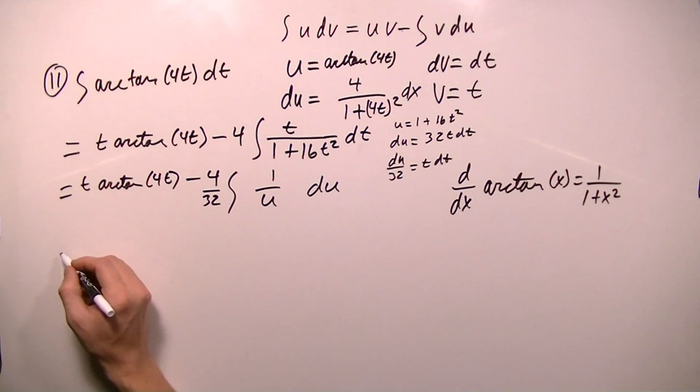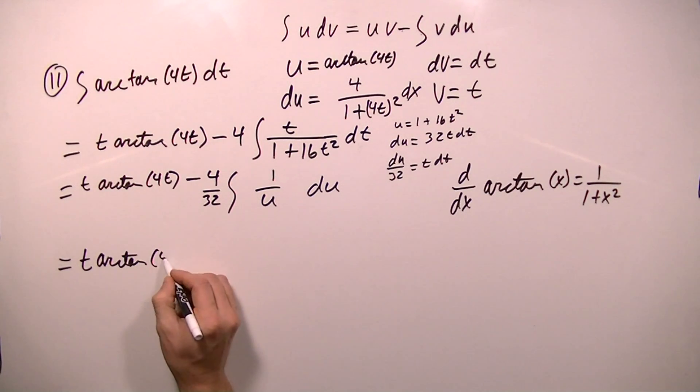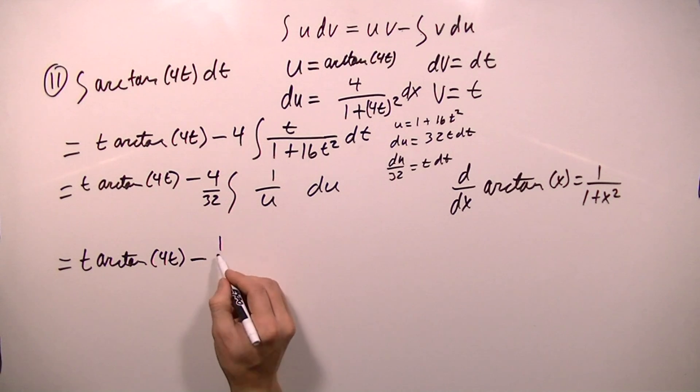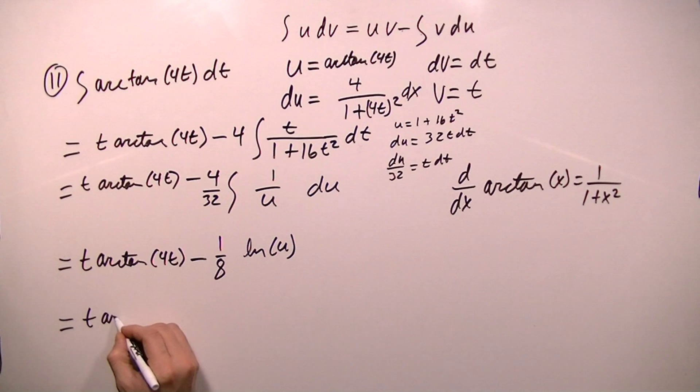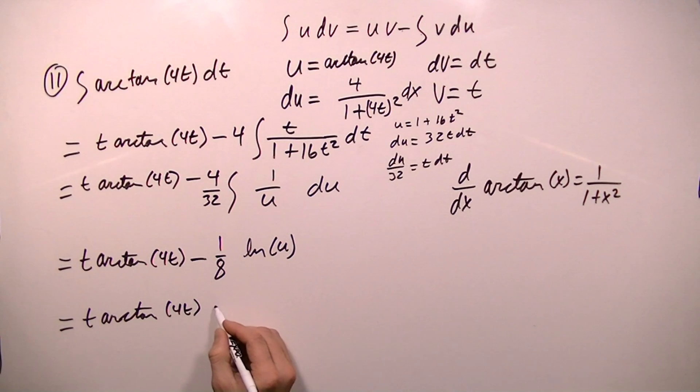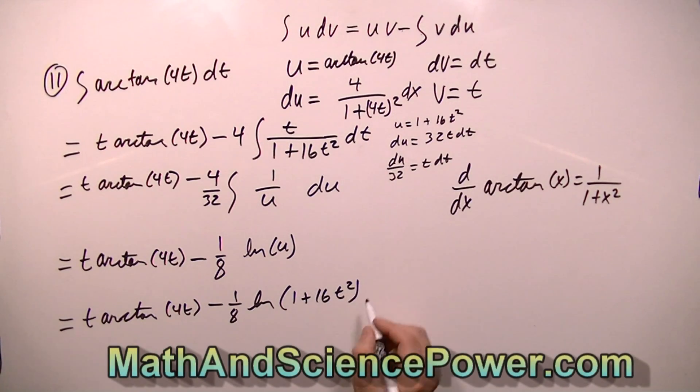And now I can take this integral. This equals t arctan 4t minus, and this reduces to 1 eighth. And the integral of 1 over u is the natural logarithm of u. And I just have to plug back in for my substitution here. So the answer is t arctan 4t minus 1 eighth natural logarithm of 1 plus 16t squared. And I can't forget to add the c here because we're looking for an indefinite integral.